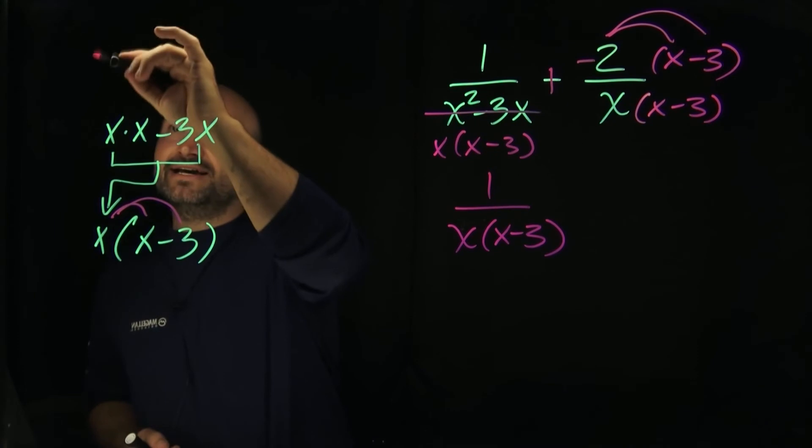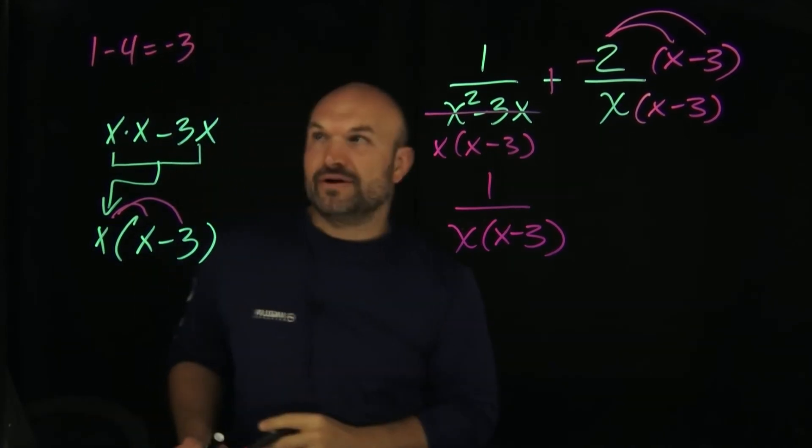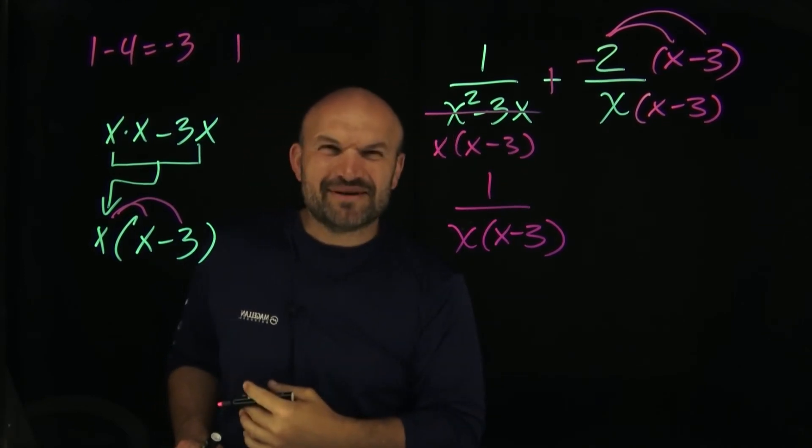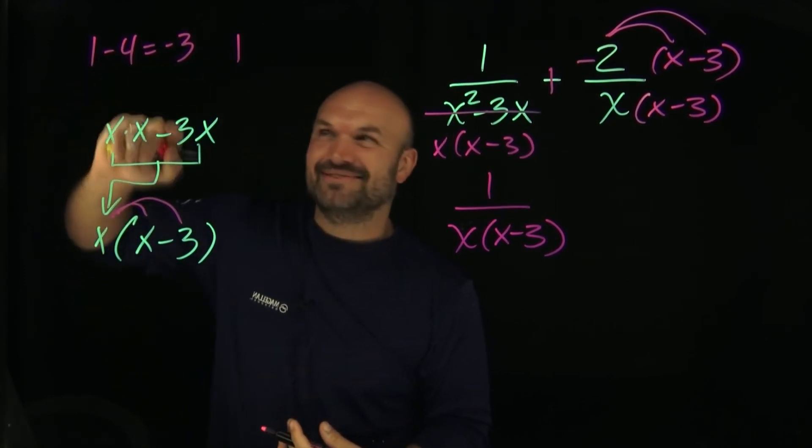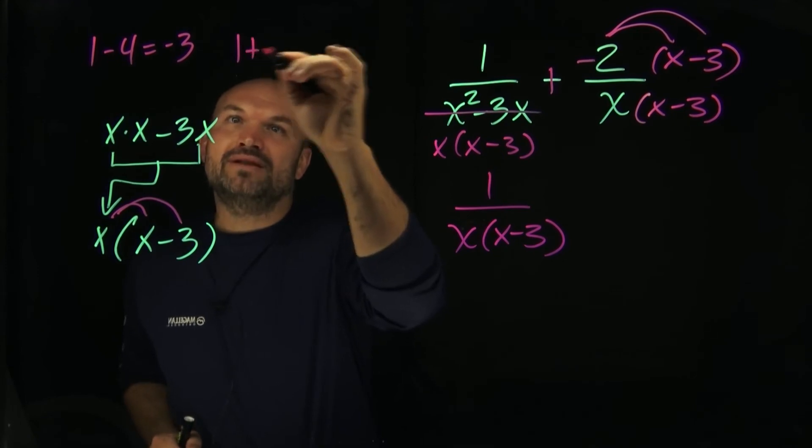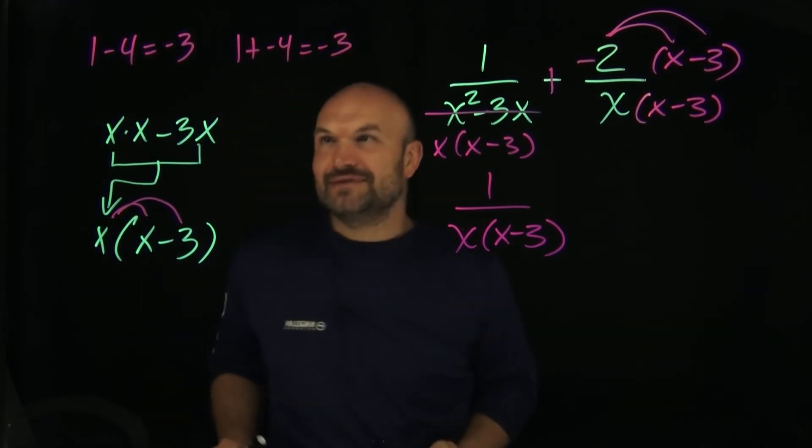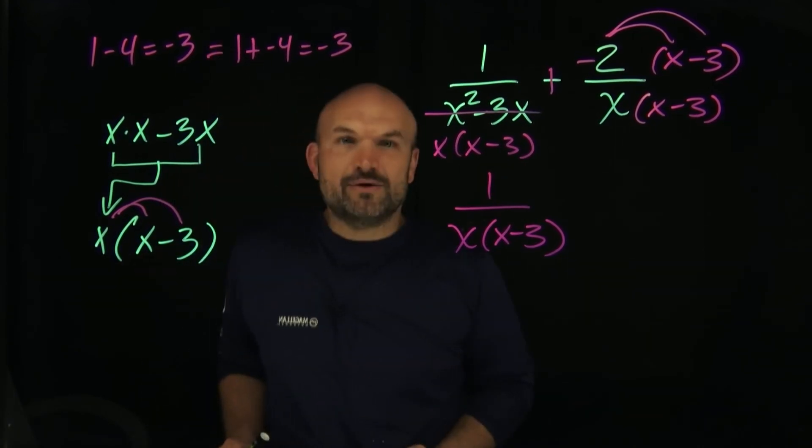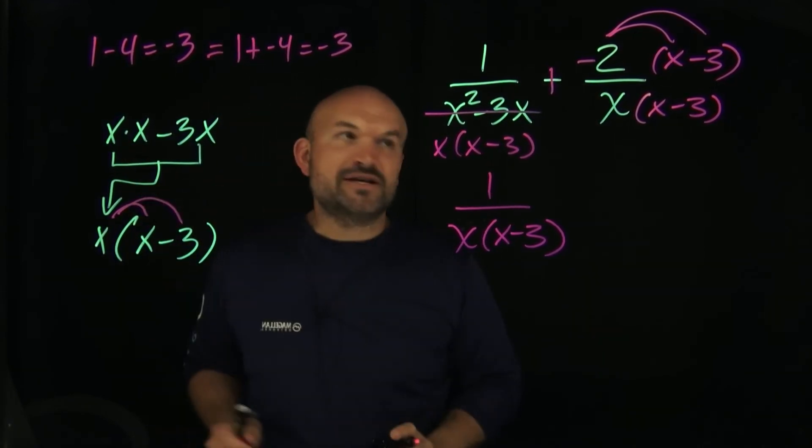Adding a negative is the same thing as subtracting. If you think about it this way: if I had 1 minus 4, that's negative 3. The same thing if I said 1 plus negative 4, that's also going to equal negative 3. These are equivalent equations, or equivalent expressions to represent that.